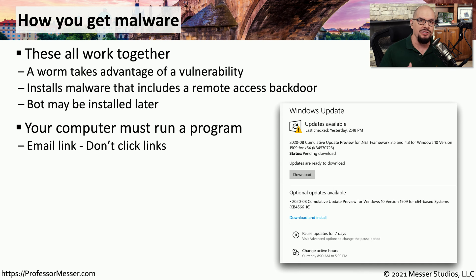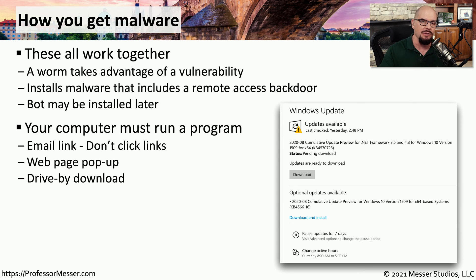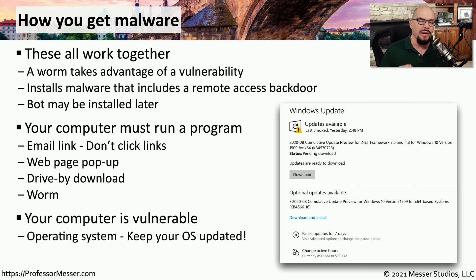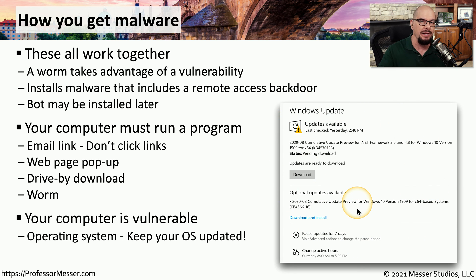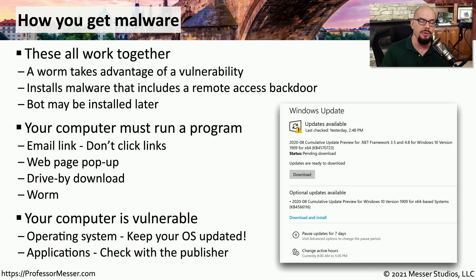In any of these cases, there has to initially be some software running in your operating system. This can happen by clicking a link inside of an email, a pop-up on a web page, or by visiting a website where a file is automatically downloaded to your computer. If you don't update your operating system with the latest patches, there might be a vulnerability that a worm takes advantage of, so you didn't have to click anything for your system to be infected. This is why you should always keep your operating system up to the latest series of patches, using the built-in update process to check for and install new updates. You should also check with all the manufacturers of the software you use to make sure all of your applications are patched to the latest version.